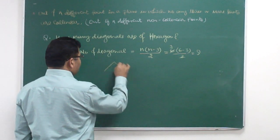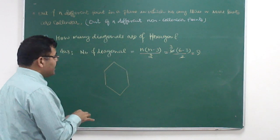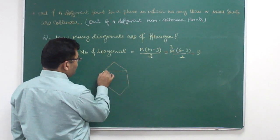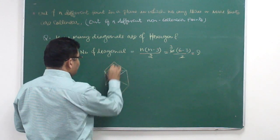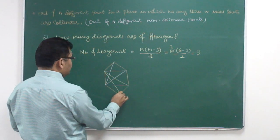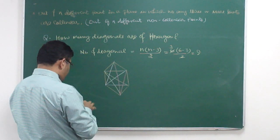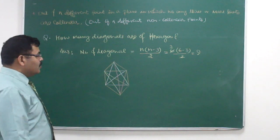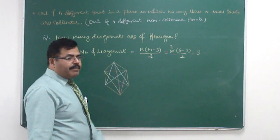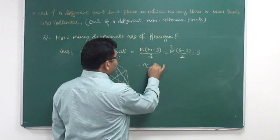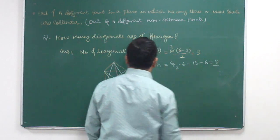This is a hexagon. Counting its diagonals: 1, 2, 3, 4, 5, 6, 7, 8, 9. Yes, 9 diagonals. You can see the formula works. We can also verify using 6C2 minus 6: 6C2 is 15, minus 6 equals 9.